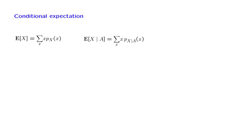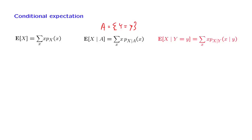We have already seen conditional expectations for the case where we condition on an event A. The case where we condition on random variables is exactly the same. We let the event A be the event that Y takes on a specific value, and then calculate the expectation using the relevant conditional probabilities given by the conditional PMF. So the conditional expectation of X, given that Y takes on a certain value little y, is defined as the usual expectation except that we use the conditional probabilities given that Y takes on a specific value little y.